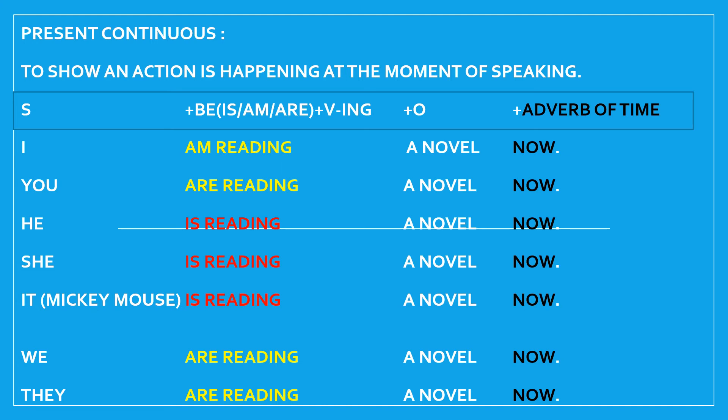More examples: You are reading a novel now. He is reading a novel now. She is reading a novel now. We are reading a novel now. They are reading a novel now. So this is present continuous. Don't forget the formula — is/am/are plus verb-ing — and the adverb of time 'now' or 'at the moment.'